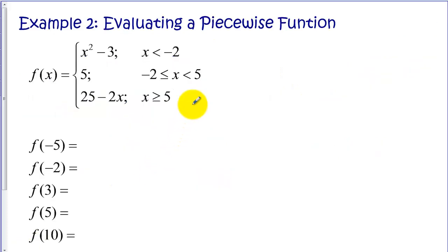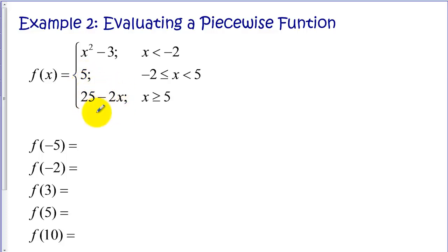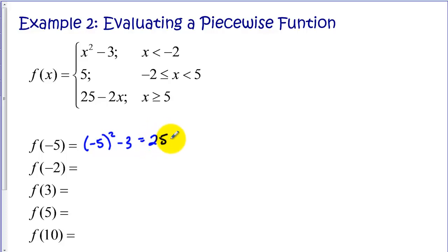Now let's focus on evaluating a piecewise function. When we have function notation, we take an input x and plug it into our function. With piecewise functions, before we plug in, we have to decide which rule to use by checking the domain statements. For f of negative 5, we check which domain negative 5 satisfies — negative 5 is less than negative 2, so we use that rule. Plugging in: negative 5 squared minus 3 equals 25 minus 3, which is 22. So f of negative 5 equals 22.